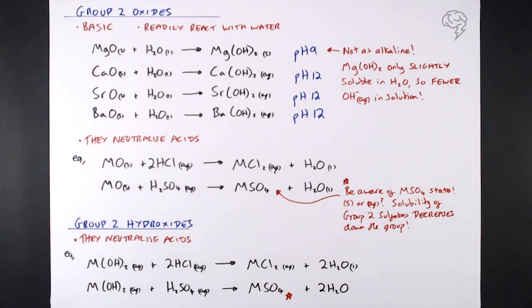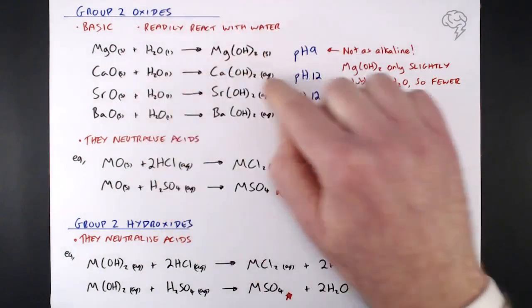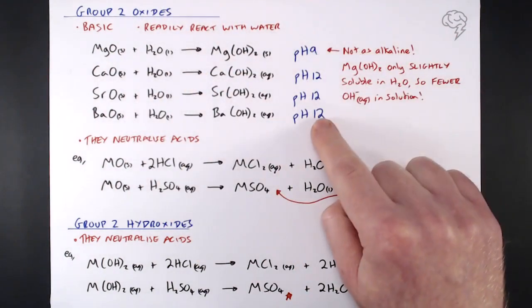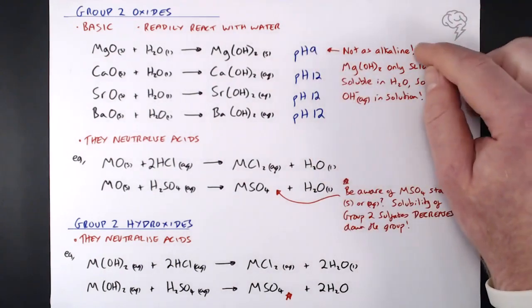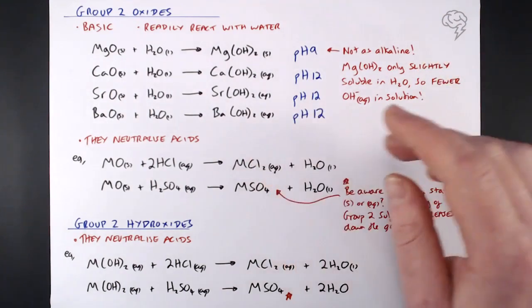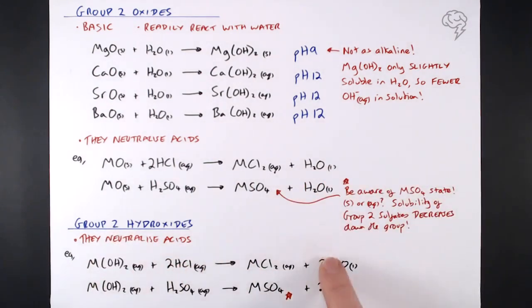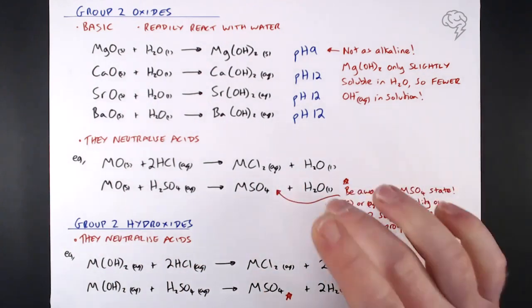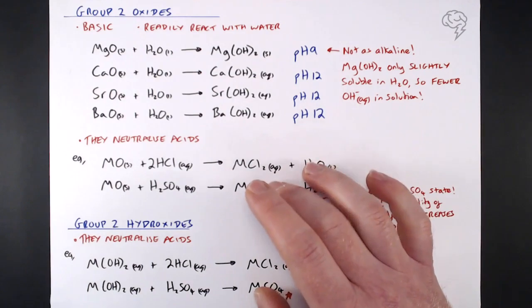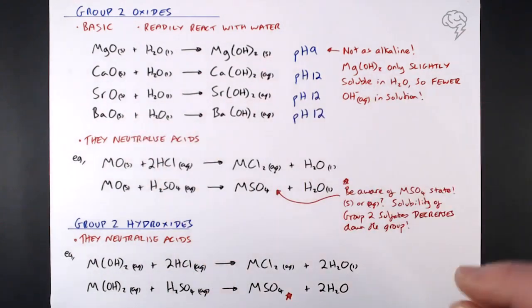To summarize: oxides readily react with water to form hydroxides with different pHs — magnesium gives a lower pH because it's not very soluble, so fewer hydroxide ions are in solution. They also neutralize acids directly in a classic salt-and-water reaction. The same applies to group 2 hydroxides. Just be aware of your state symbols, particularly for sulfates when reacting with sulfuric acid — though all chlorides are soluble, so no concern there.